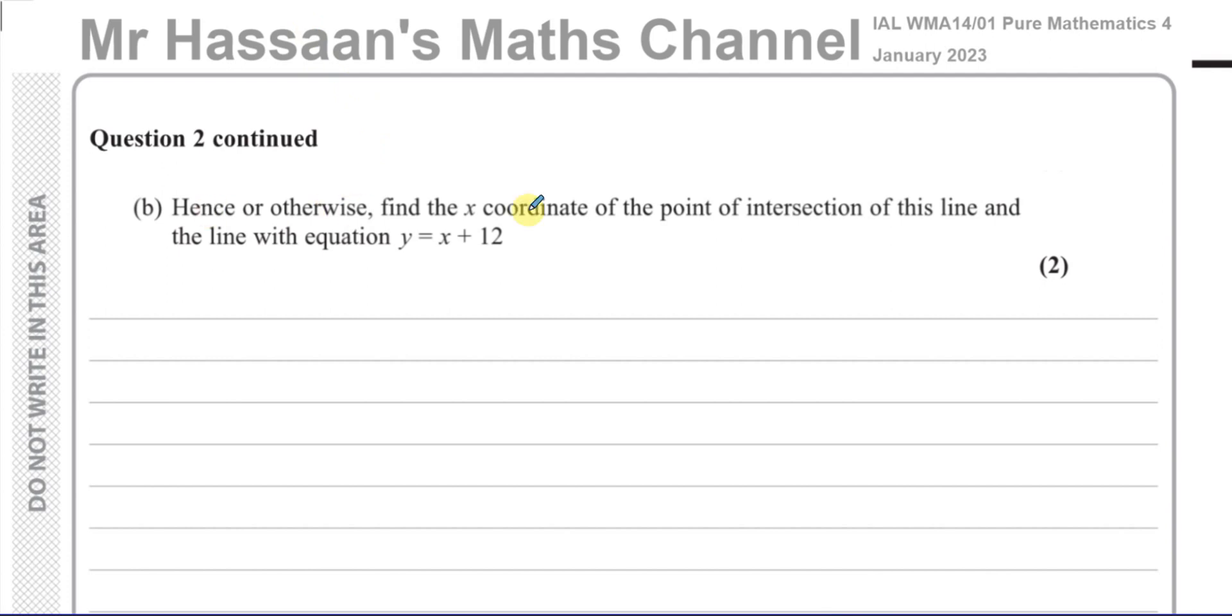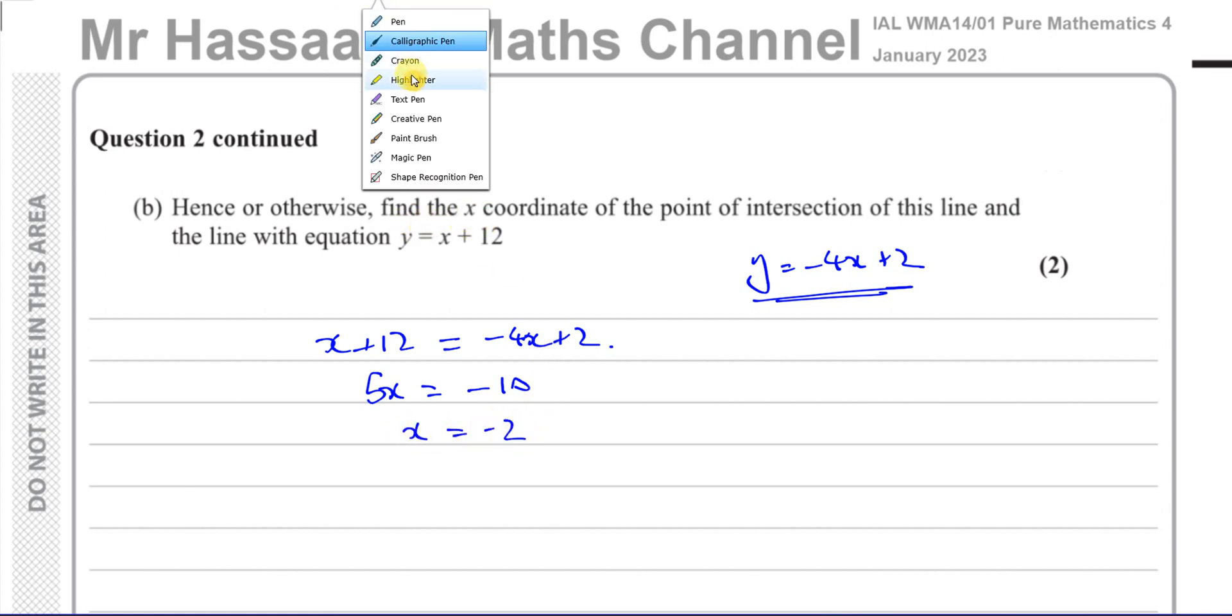Now we have to answer part B. It says, hence or otherwise, find the x-coordinate of the point of intersection of this line and the line with equation Y = x + 12. We had Y = -4x + 2. Where does it intersect with this? We have to solve them simultaneously, probably using substitution. I'll replace this Y with x + 12, so x + 12 = -4x + 2. Add 4x to both sides: 5x + 12 = 2. Subtract 12: 5x = -10, so x = -2. They only want the x-coordinate, so that's the answer.